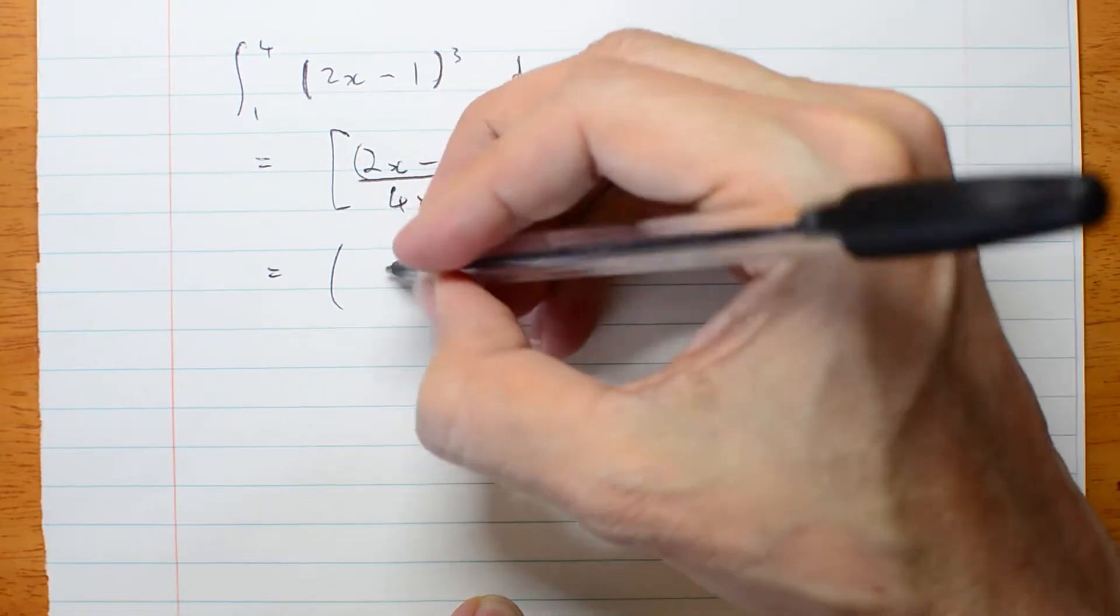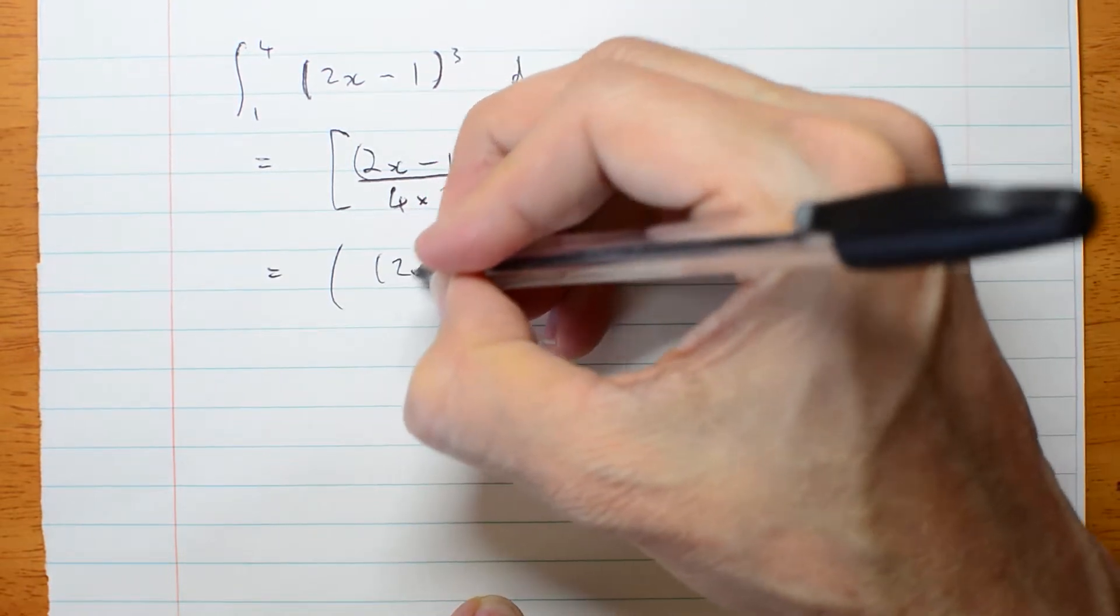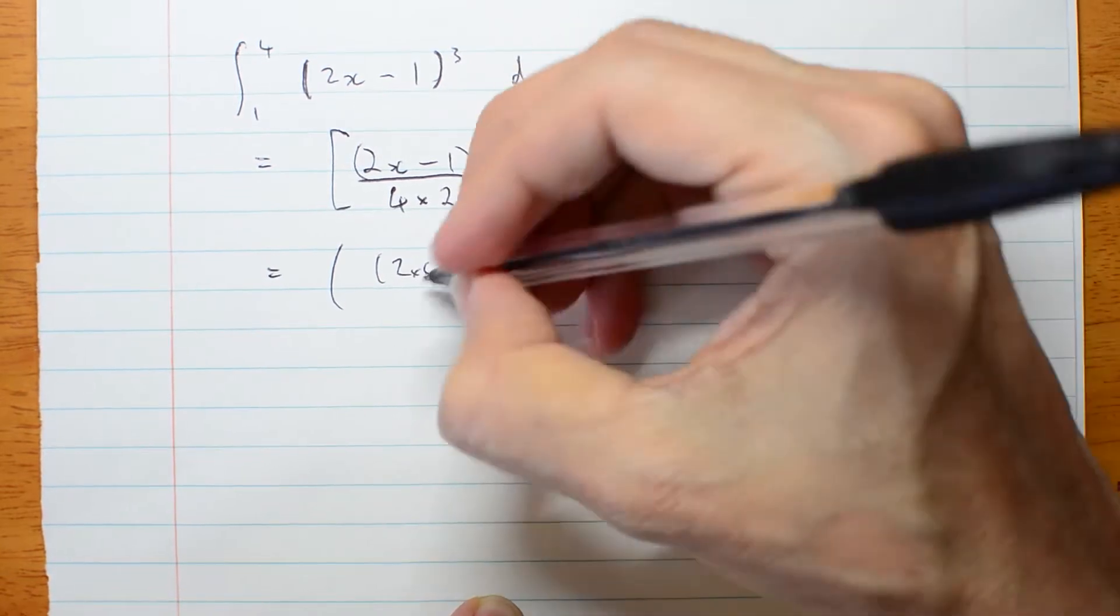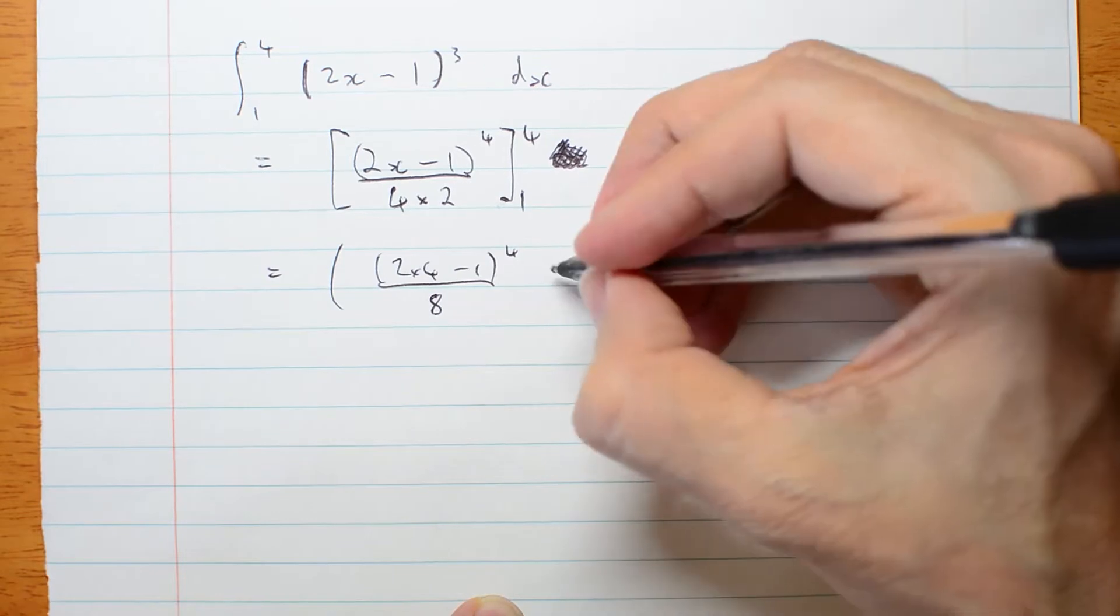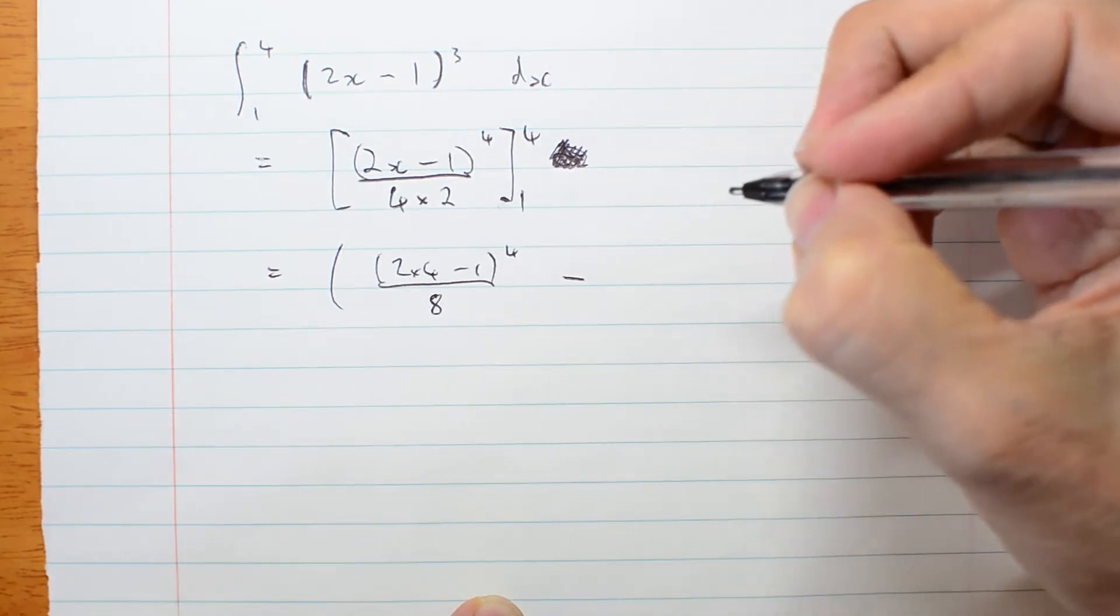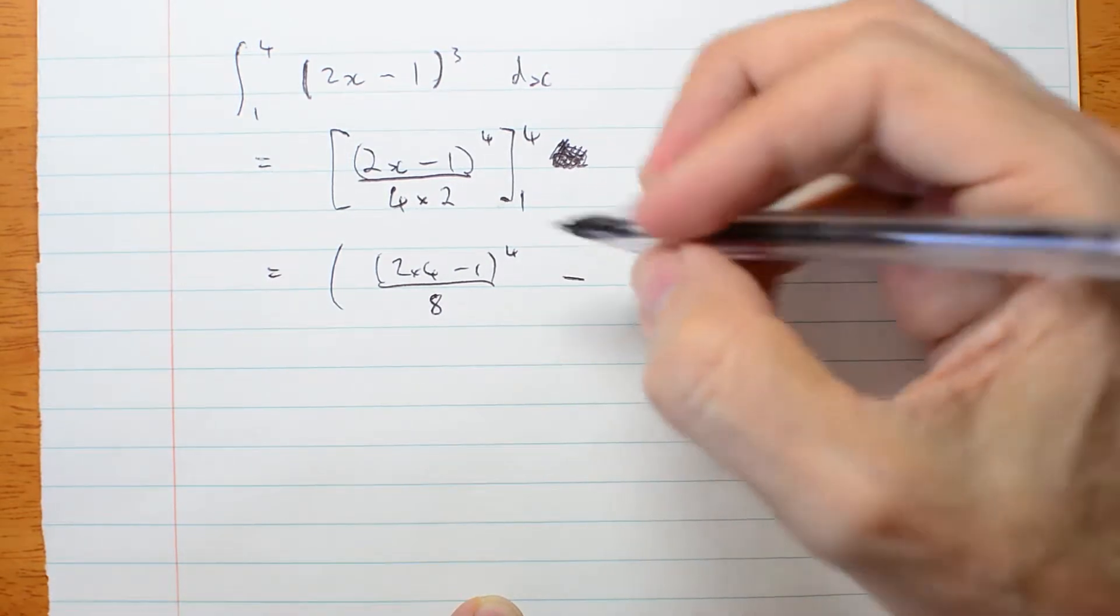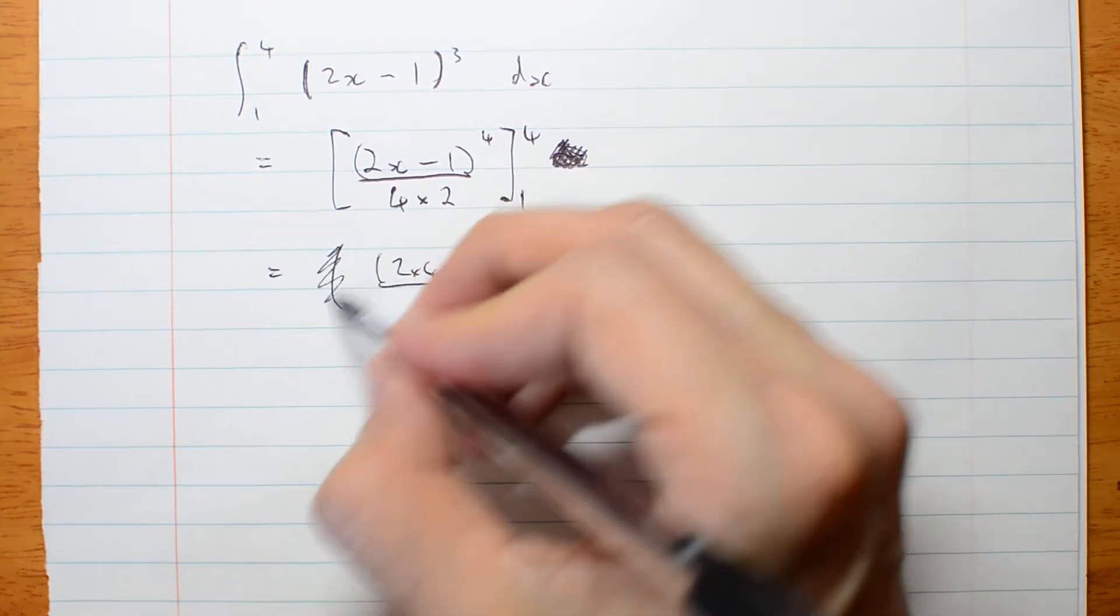So let's put 4 in. 2 times 4 minus 1 to the 4th over 8 minus, I probably didn't need this bracket here in this case. I'll do it without.